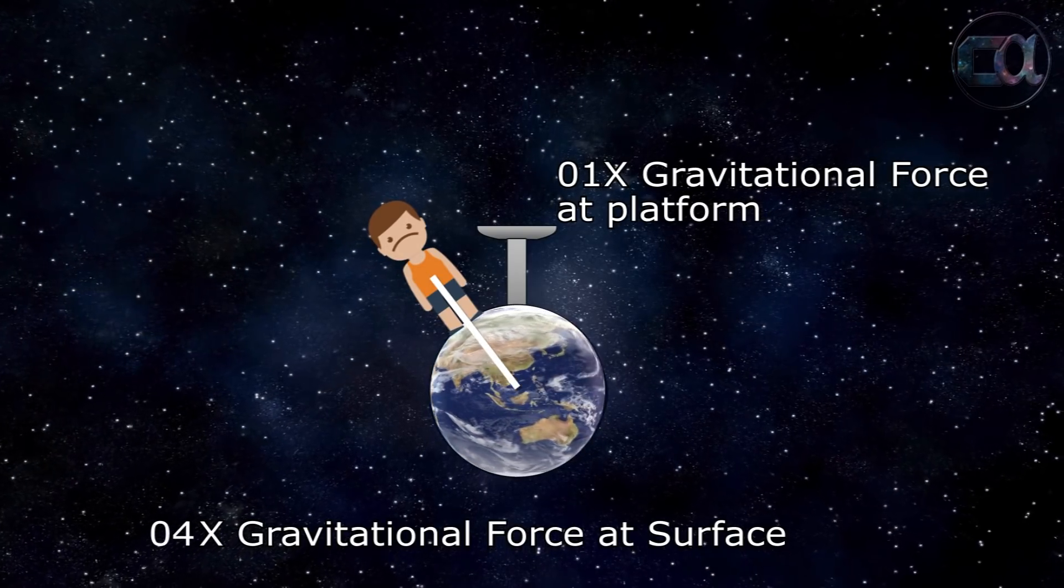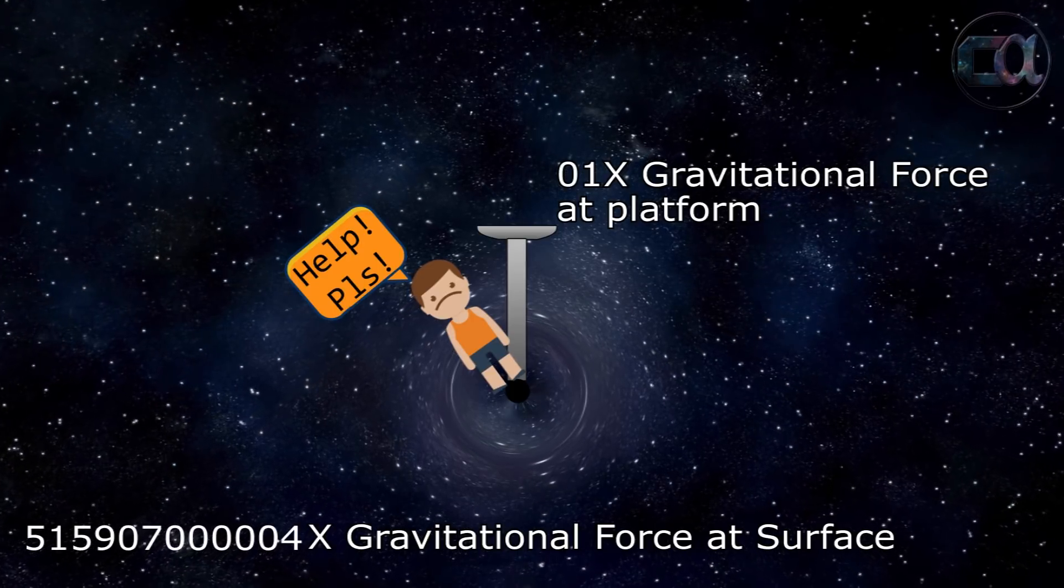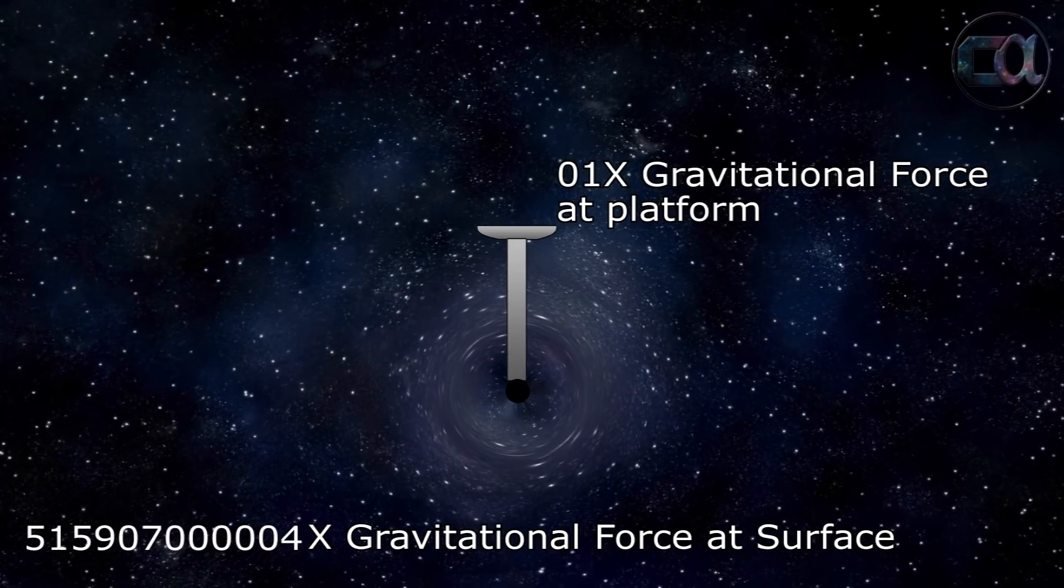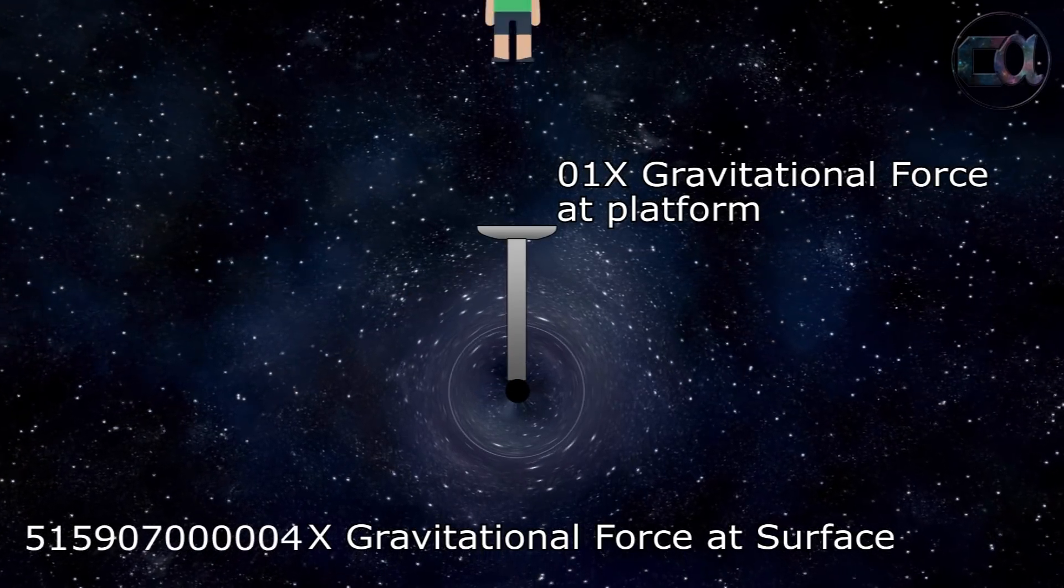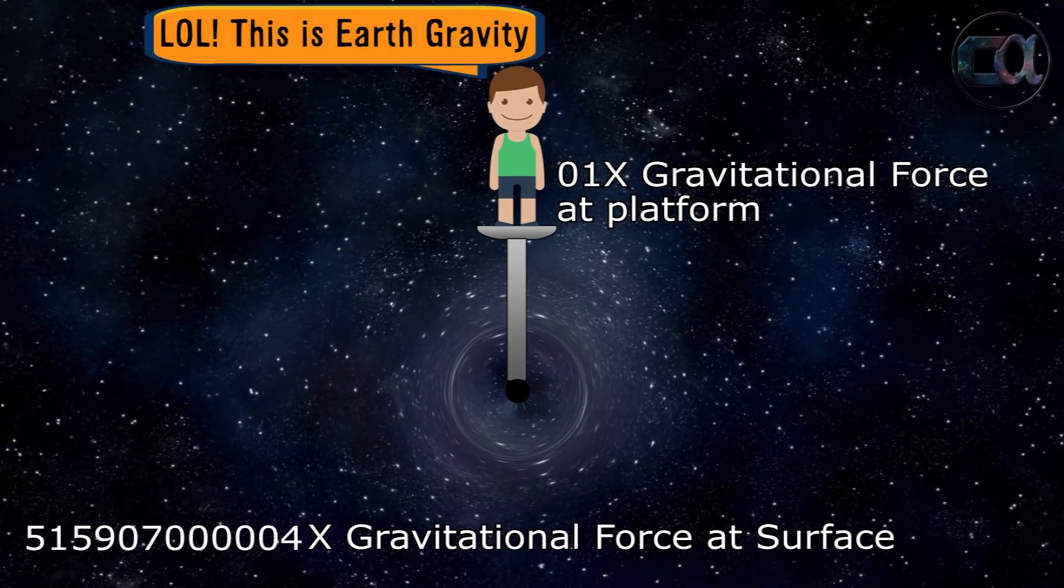When you compress that earth even further to the size of a peanut, it becomes a black hole, as now it allows you to get so close to its center that you can't get out. But at distance, the gravity of black hole seems normal just like any other body of same mass.